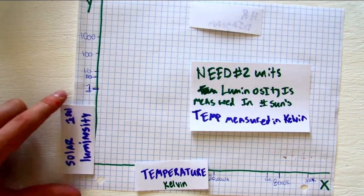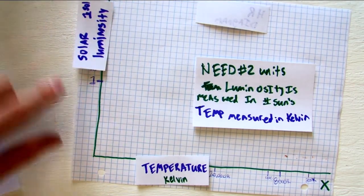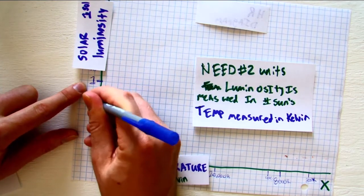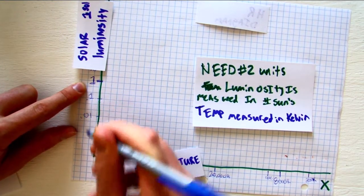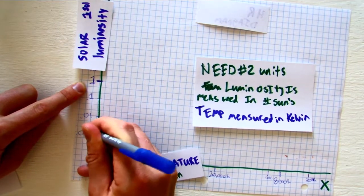And as you go down, it drops by 10 for each amount. So that's one solar luminosity, that's 0.1 solar luminosity, 0.01, 0.001.